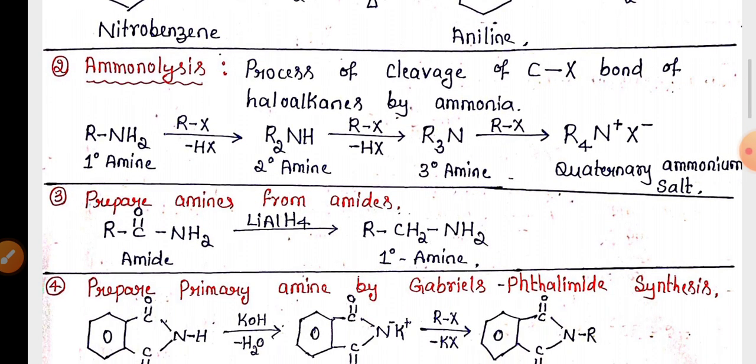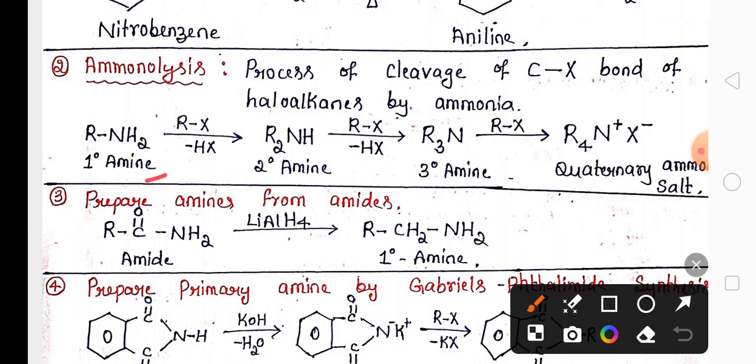Then ammonolysis definition and the general reaction is very important. But ammonolysis disadvantage is it gives a mixture of primary, secondary and tertiary amines. That's why it is not a quite good method to prepare amines. It is difficult to separate them.